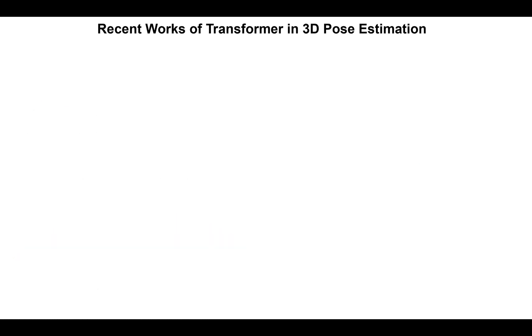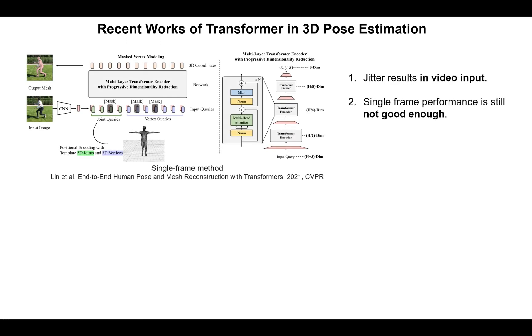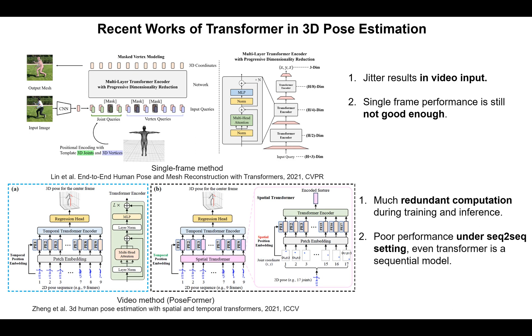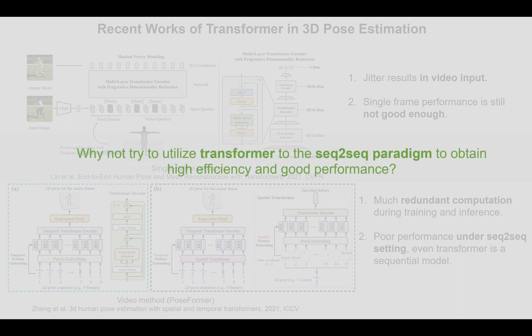Recent works introduced the transformer to 3D human pose estimation to improve spatio-temporal correlation modeling ability, but the single-frame method always has jitter results on video input and performance is still not good enough. The video-based method follows a seq-to-frame paradigm and has redundant computation. We also find that PoseFormer performs poorly under seq-to-seq setting, even though the transformer is a sequential model. So we have a natural question: why not try to utilize the transformer in a seq-to-seq paradigm to obtain high efficiency and good performance?